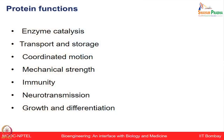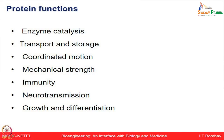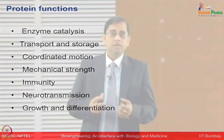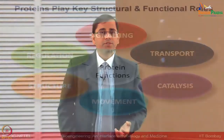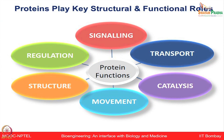Various mechanical strengths are also governed by different proteins — for example, skin and bones by collagen proteins and hair by the keratin protein. Proteins are also involved in the immunity process; for example, antibodies exemplify the specificity of protein-protein and protein-ligand interactions. They are also involved in neurotransmission, which is the response of cells to stimuli in nerve cells. In the process of growth and differentiation, for example, transcription factors are involved in gene expression during growth and development. Proteins play key structural and functional roles and define a wide range of functions including signaling, transport, catalysis, movement, structure, and regulation.